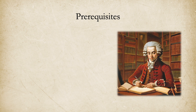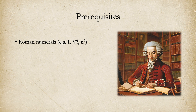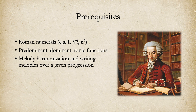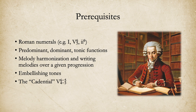This isn't a video for complete beginners. You should already know some music theory relevant to the Austro-German 18th century classical style. This includes Roman numerals, functional harmony, the relationship of melody and harmony, embellishing tones such as neighbor tones, and the cadential 6-4.